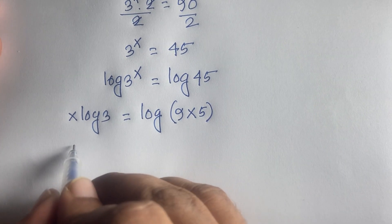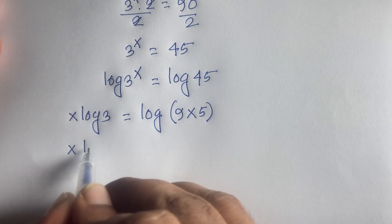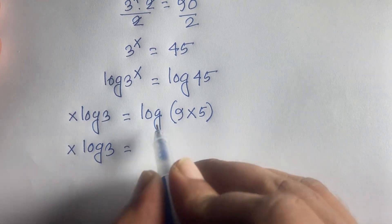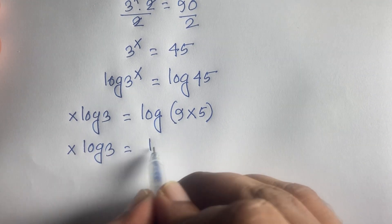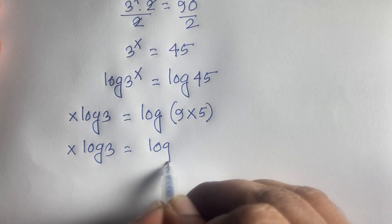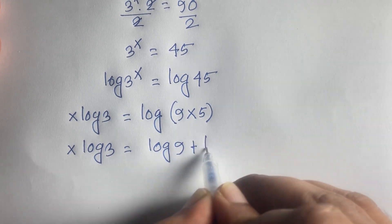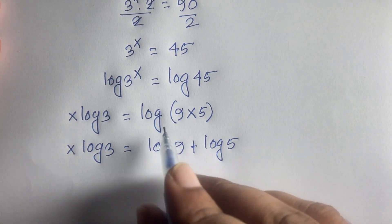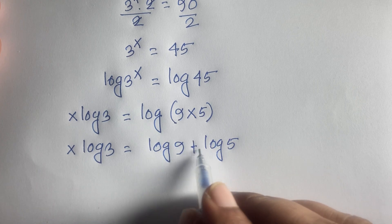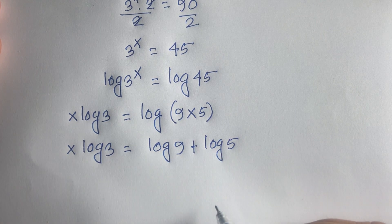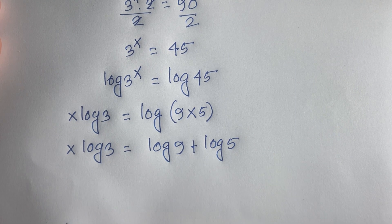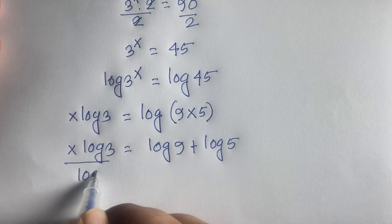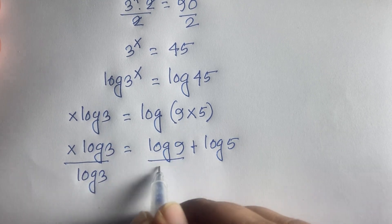In this case I can see easily here is x log 3 is equal to log 9 plus log 5, because we know that log(a×b) equals log a plus log b, according to this logarithm rule.